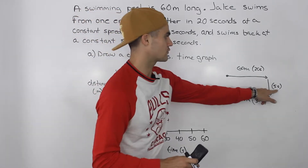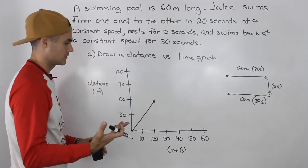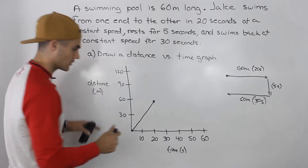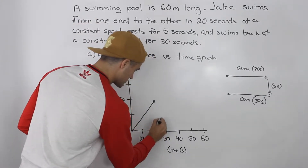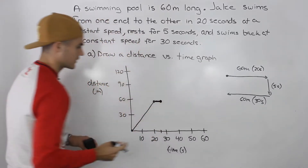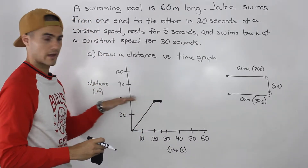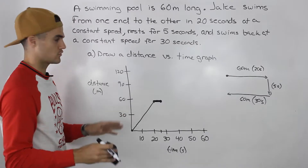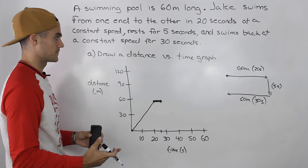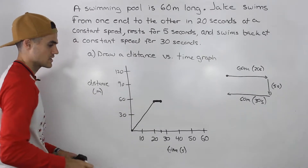What is next? He rests for five seconds. When he's resting, he is not moving, and if he's not moving, he's not covering any distance — there's no displacement. So up until 25 seconds, he's not covering any distance. It's just a horizontal line. A horizontal line on a displacement versus time graph means the object is not moving; its speed is zero.